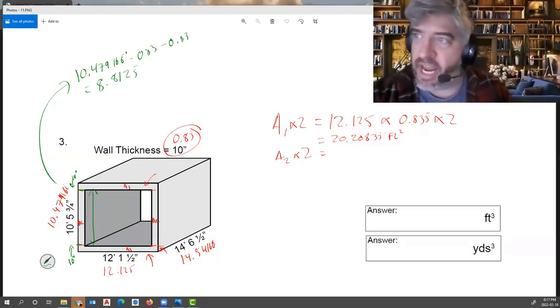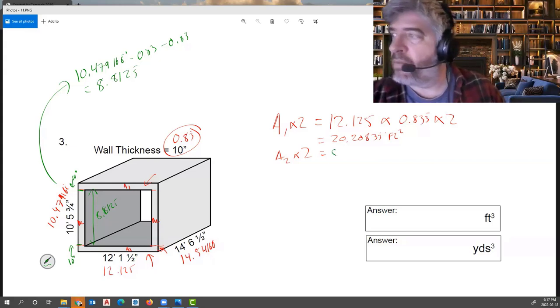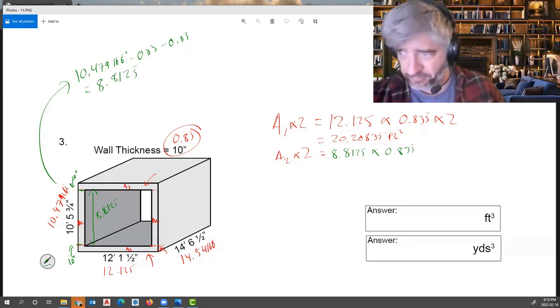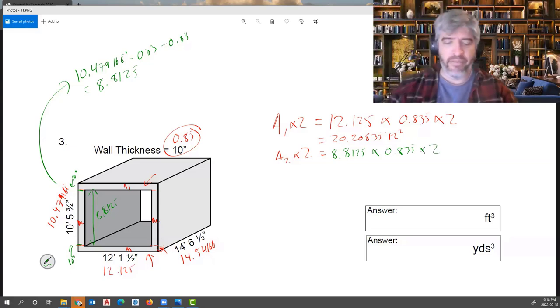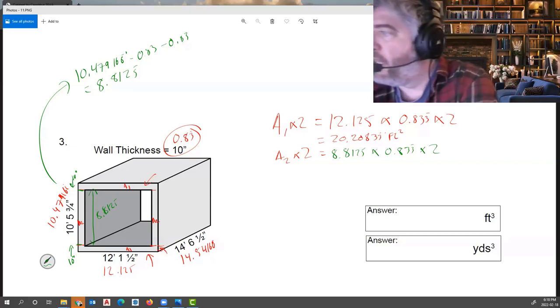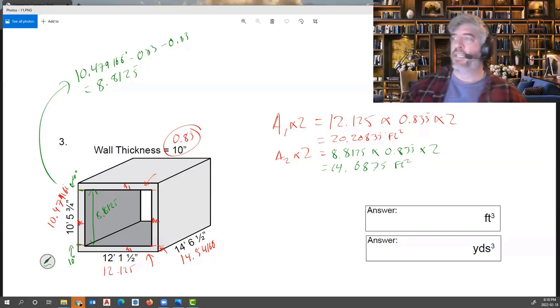And that is the length here, 8.8125. So now for my area number two, the length would be 8.8125 times the width, which is still that 10 inches, 0.833. And then I would times this by two because there's two of those shapes. So I have 8.8125 times 0.83333 times two, and this gives me 14.6875 square feet.